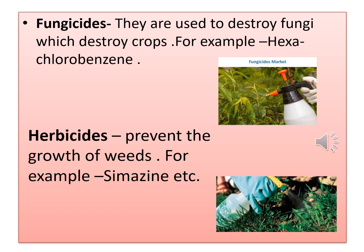Fungicides are used to destroy fungi which destroy crops. The chemical used in the formation of fungicides is hexachlorobenzene. The last one is herbicides. Herbicides are used to prevent the growth of weeds. Weeds are unwanted plants found in crops which destroy them. The chemical used for the formation of herbicide is simazine.